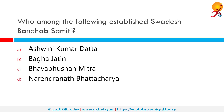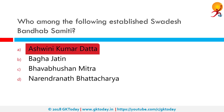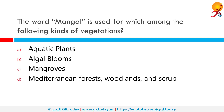Who among the following established Swadesh Bandhap Samithi? Swadesh Bandhap Samithi was set up by Ashwini Kumar Datta, a school teacher in Barishal. It was a well-known volunteer organization that aimed to promote the consumption of indigenous products and the boycott of foreign goods. In 1908, the government of the newly formed Eastern Bengal and Assam banned this Samithi and deported him to United Provinces.